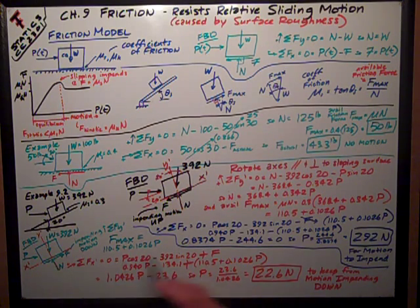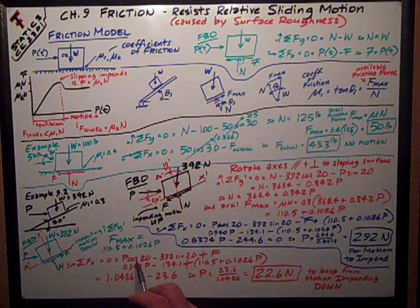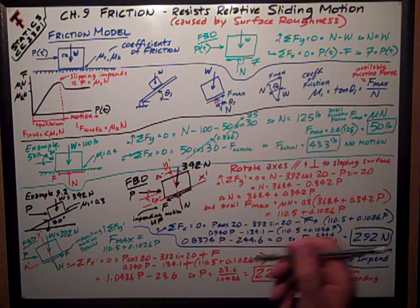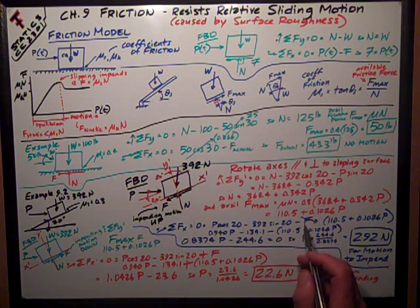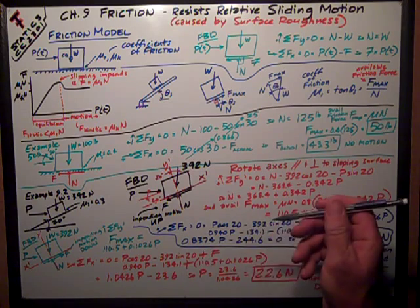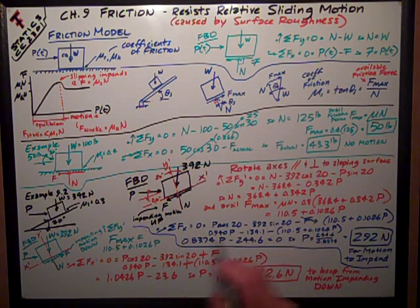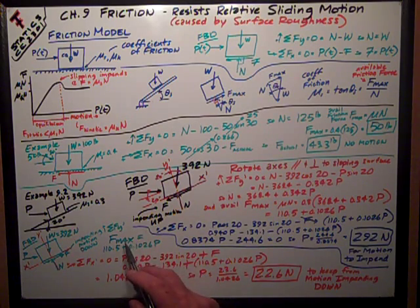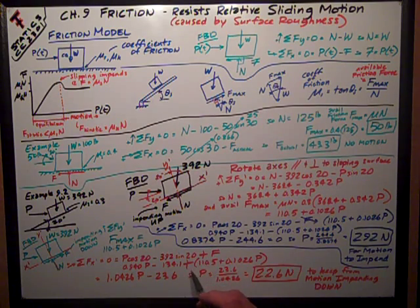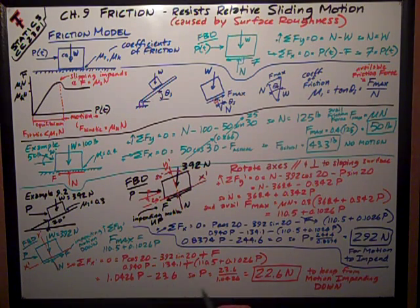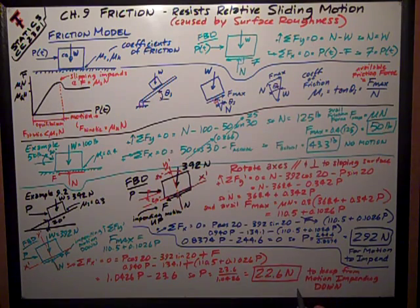Now just one component changes in my sum of forces in the x-prime direction: I still have the pushing-up component and the weight component sliding down the hill, but this time instead of minus F I have plus F, because my friction force is now going up in the positive x-prime direction. So it's plus 110.5 plus 0.1026P. Combining all the terms, I get P equals 23.6 divided by 1.0426, which equals 22.6 newtons to keep motion from impending downward.